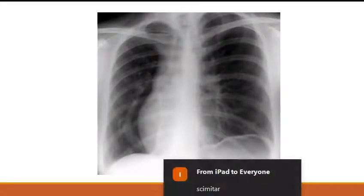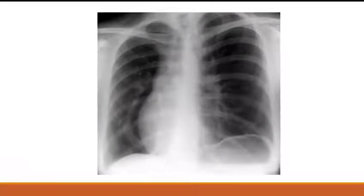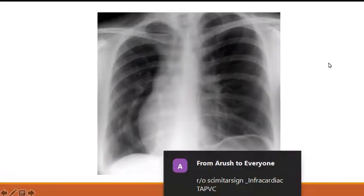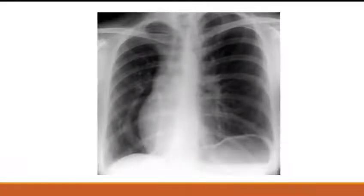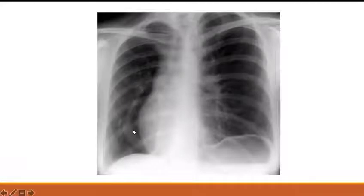This is a child with a moderate-sized atrial septal defect and moderate pulmonary arterial hypertension. Echo showed a moderate-sized ASD. On the X-ray, situs is solitus, and there is dextrocardia because the apex is on the right-hand side. On the right-hand side there is an opacity in the lung field — it is like the Turkish sword appearance, which is characteristic of scimitar syndrome with dextroversion.